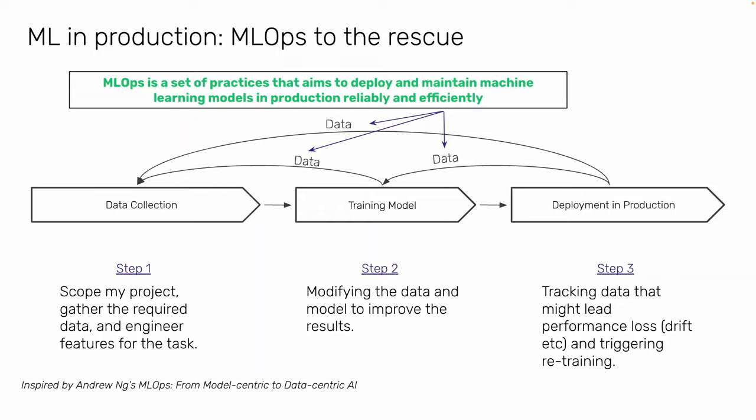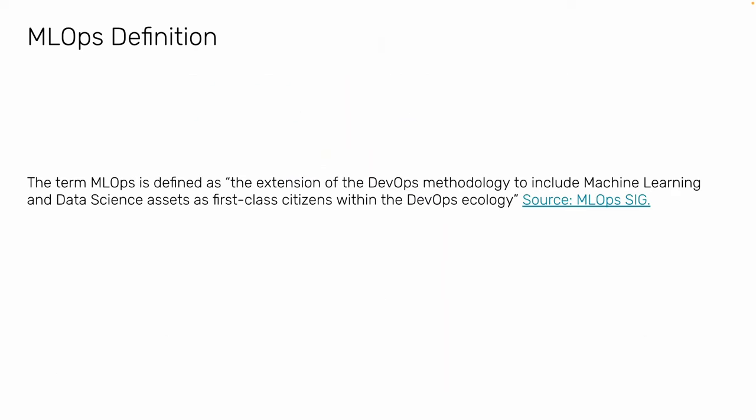ML in production is hard to make reliable when deploying, retraining, and collecting data in a loop. That's where MLOps comes in. MLOps is a set of practices — not a library or a single tool — that aims to deploy and maintain machine learning models in production reliably and efficiently. It ensures that if data changes, the model retrains; if assumptions are violated, it goes back and adjusts. The term MLOps is like an extension of the DevOps methodology to include machine learning and data science assets.